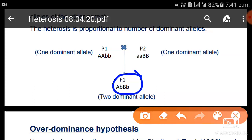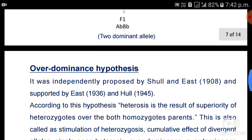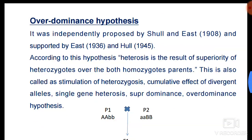The conclusion of the dominance hypothesis is that the greater the accumulation of dominant alleles in a single progeny, the more superior the F1 will be. When two parents each contribute dominant genes, the F1 accumulates more dominant alleles in a single progeny.